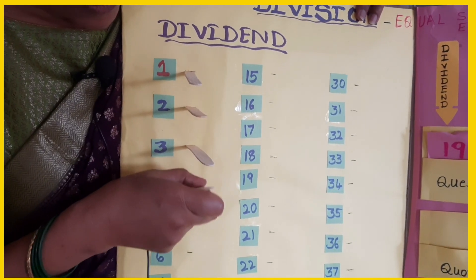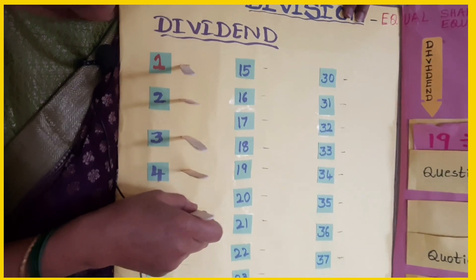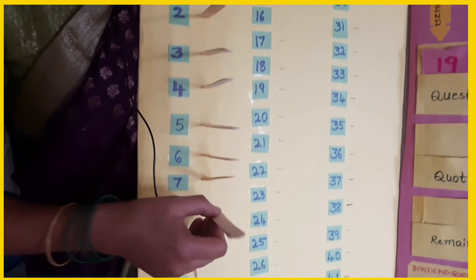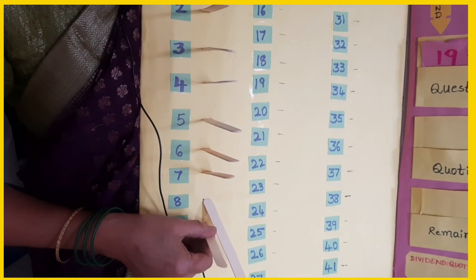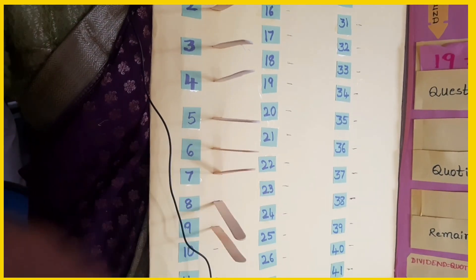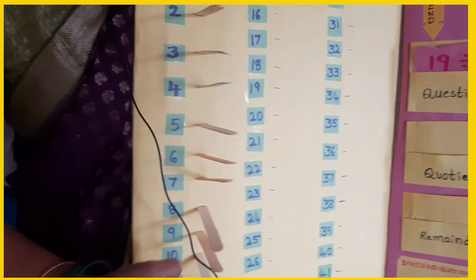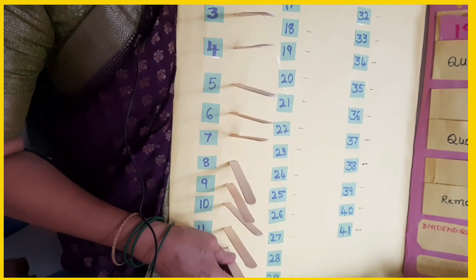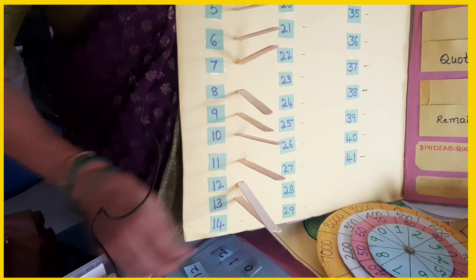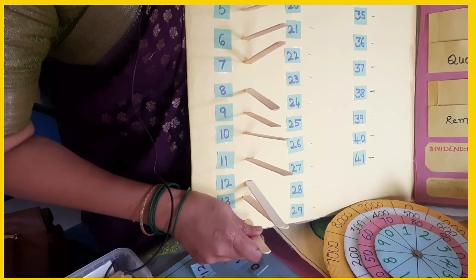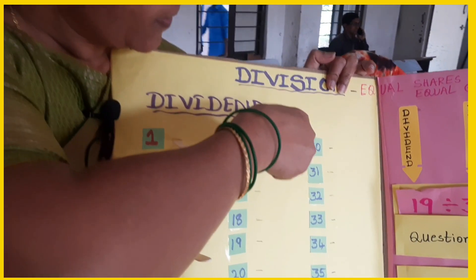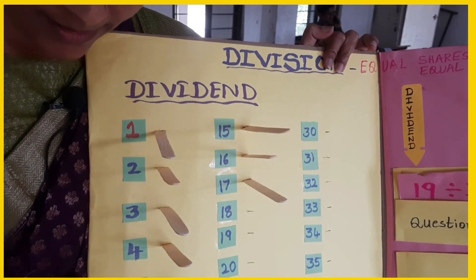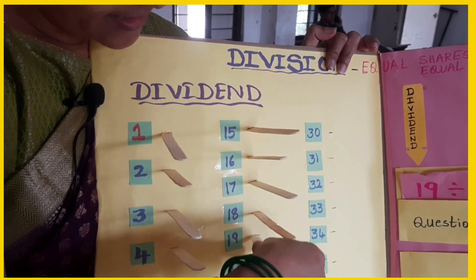We count out the sticks one by one: 4, 5, 6, 7, 8, 9, 10, 11, 12, 13, 14, 15, 16, 17, 18, 19. All 19 sticks are placed.